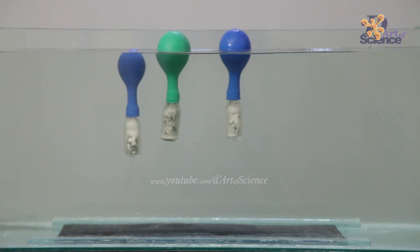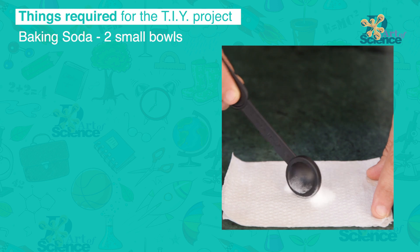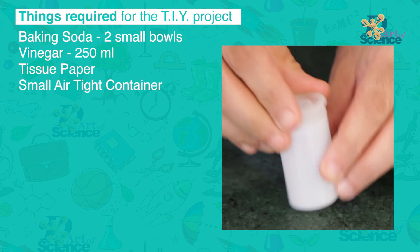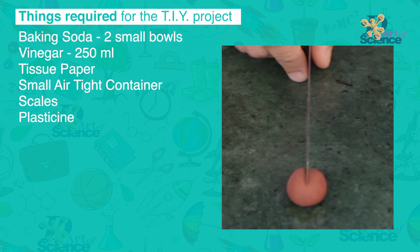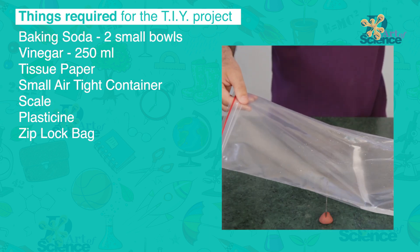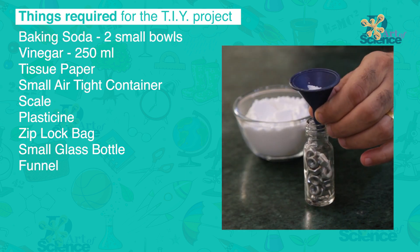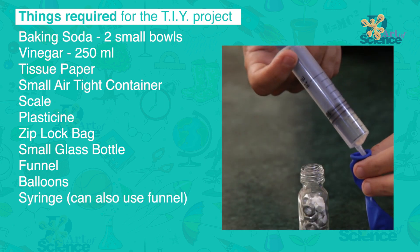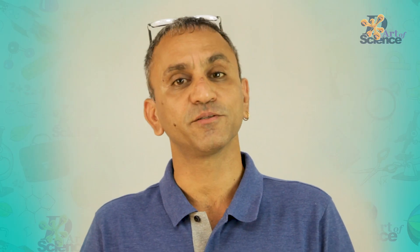You can have some fun using the science you just learnt. Things required for the TIY project: baking soda, 2 small bowls, approximately 250 ml of vinegar, tissue paper, a snap top container, a scale or stick, plasticine, a ziplock bag or transparent polythene bag, small glass bottles, a small funnel or paper cone, balloons, and optionally a syringe. Also a fish tank or tall water container. The next lesson is on friction, so be sure to watch it for some more excitement while you learn science.